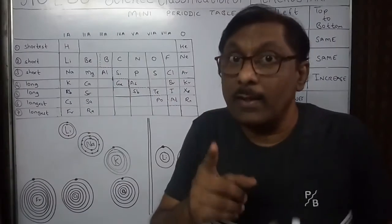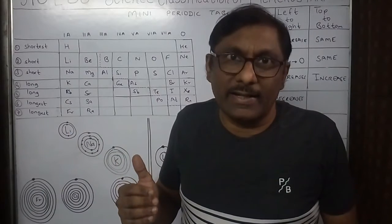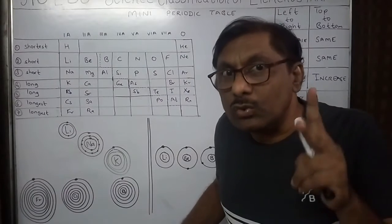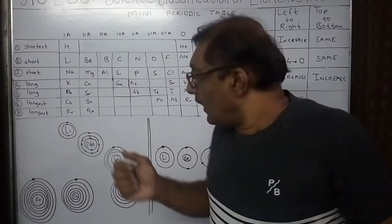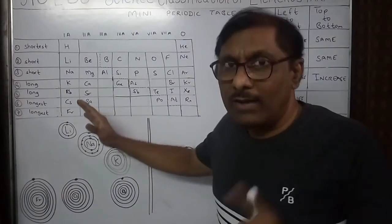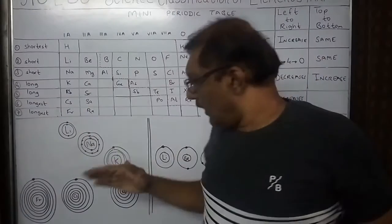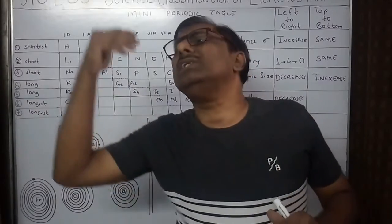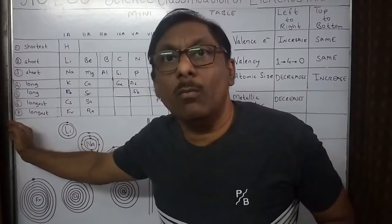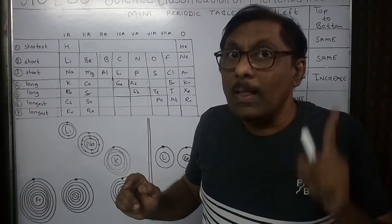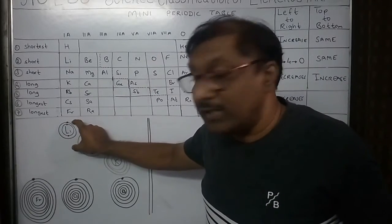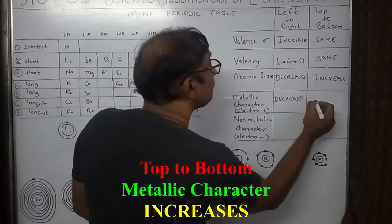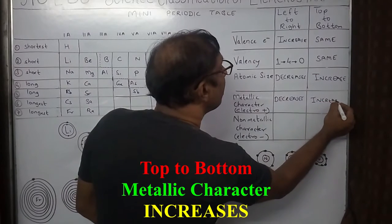What about from top to bottom? Ease of giving electrons is called metallic character or electropositivity. Looking at group 1: lithium, sodium, potassium, rubidium, cesium, and francium. As we go down, the number of shells increases — lithium has two shells and its electron is in a tighter orbit. Sodium has three shells, potassium four, and so on. Though all have one electron in the outermost orbit, in francium that electron is very distant from the nucleus, so the pull towards the center is very weak. Francium can give electrons more easily than lithium. Therefore, as we go from top to bottom, metallic character increases.